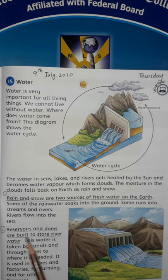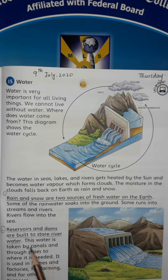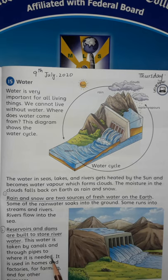Reservoirs and dams are built to store river water. This water is taken by canals and through pipes to where it is needed. It is used in homes and factories, for farming, and for other purposes.